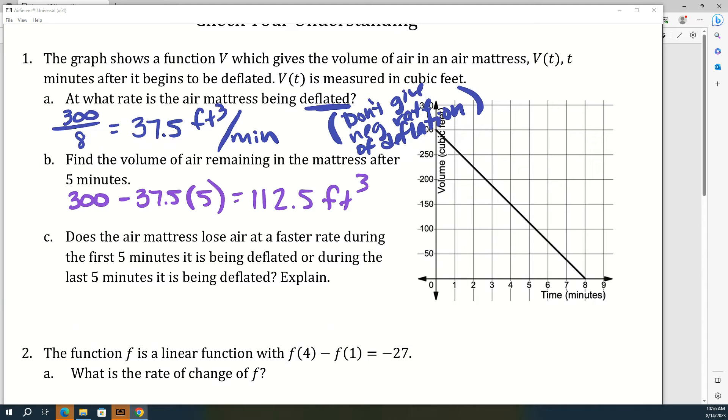And then c, does the air mattress lose air at a faster rate during the first five minutes it is being deflated or during the last five minutes it is being deflated, or at neither of those times? What do y'all think? Is it ever deflating faster than another time? This is linear, no. So this is a trick question. This is neither. The air is being deflated at a constant rate the whole time.